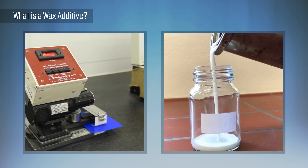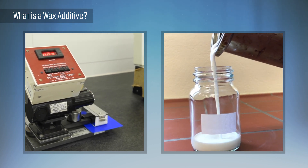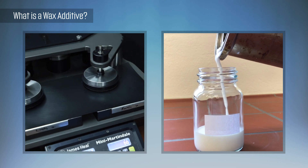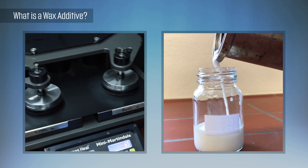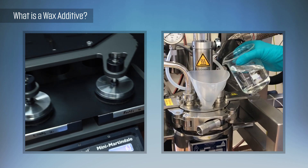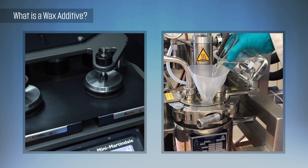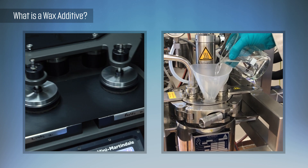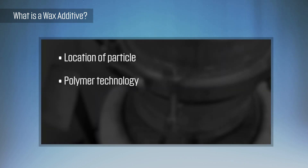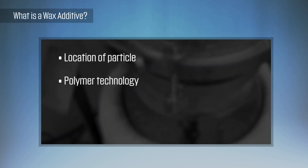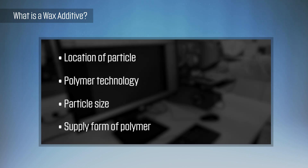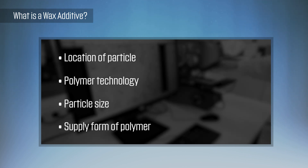Therefore, to optimize surface modification and achieve the right balance of aesthetics and performance, there are four key variables to consider. These include the location of the particle, polymer technology, particle size, and the supplied particle form.